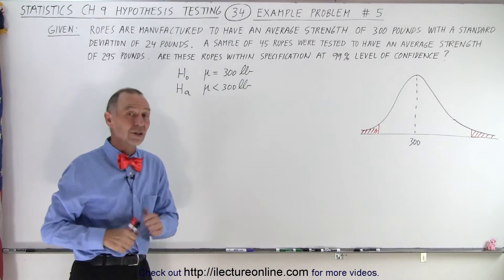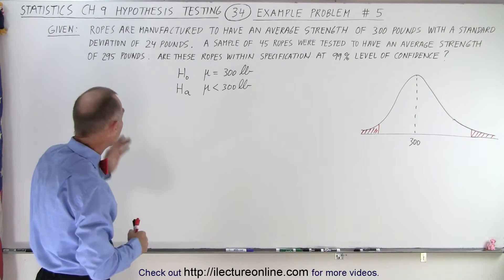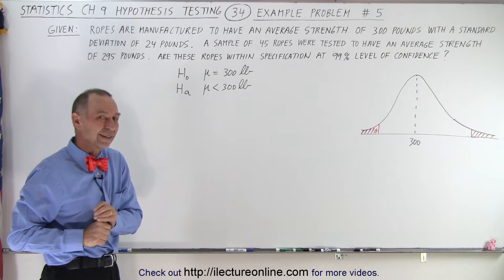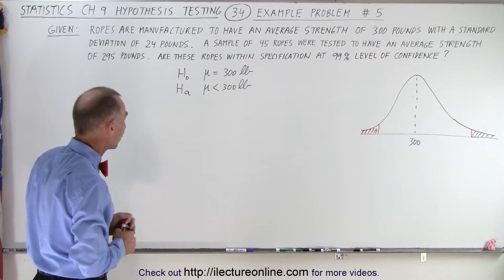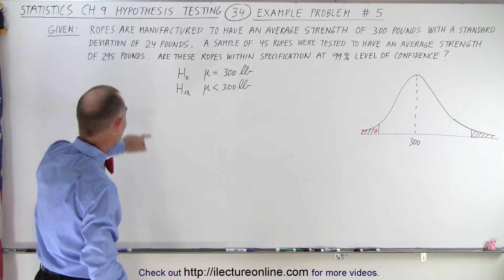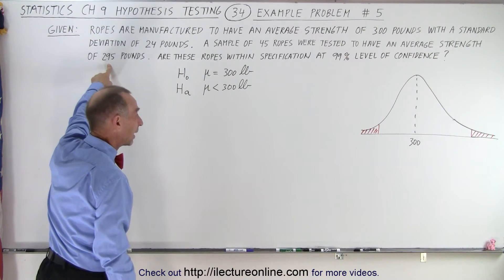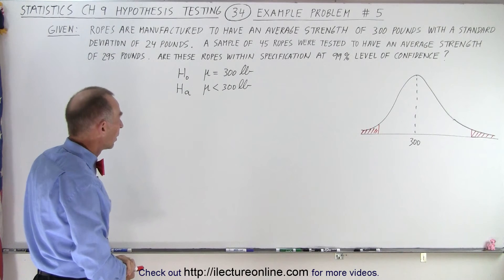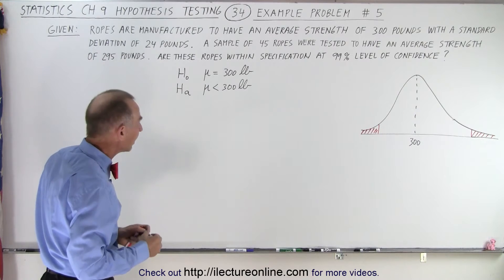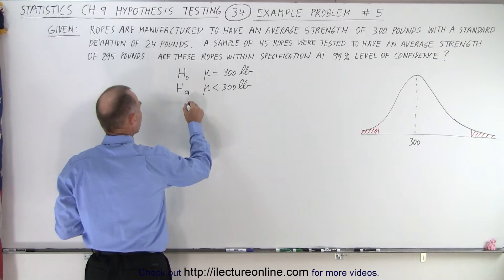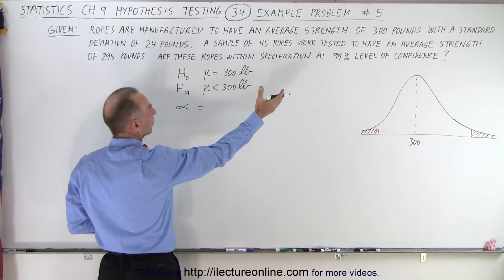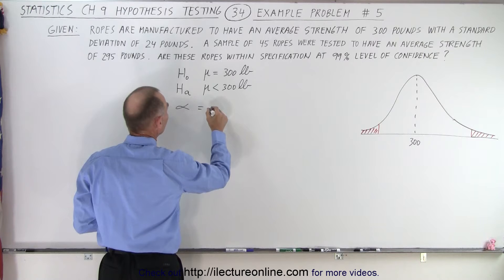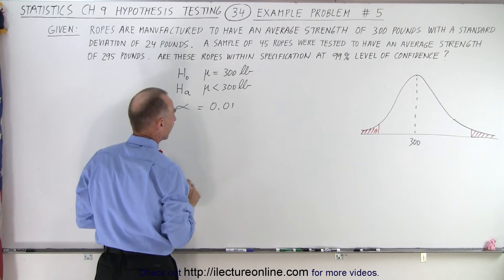Either it meets the specification — 300 pounds is the average with a standard deviation of 24 — or it's not 300 pounds, either more or less. We do have a sample average that is less than 300 pounds, so we're concerned about not meeting the minimum standard. The level of confidence is 99%, so the level of significance is therefore equal to 0.01 — that's one percent.